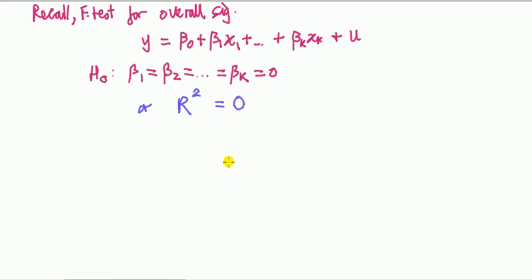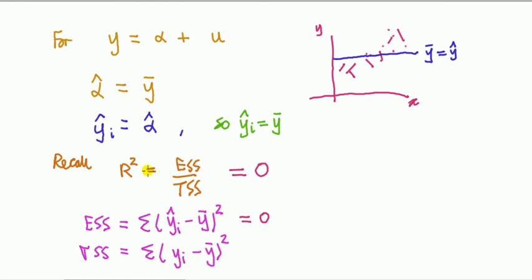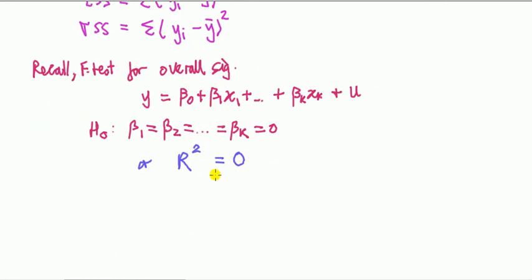And now you can see why, because if all the slopes are zero, that's just regressing y on an intercept. Well, if you regress y on an intercept, it was just shown here that your R squared is zero, hence this expression. I think that's worth doing today, because I've shown you a model where R squared is zero, and I've linked it to the F test for overall significance as well.